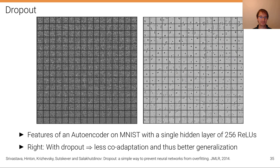Here's an example of what this does. So this is a simple autoencoder—we're going to talk about this type of models later—in the lecture on MNIST with a single hidden layer of 256 ReLUs. And what is shown here are the activations of these units, so feature visualization.